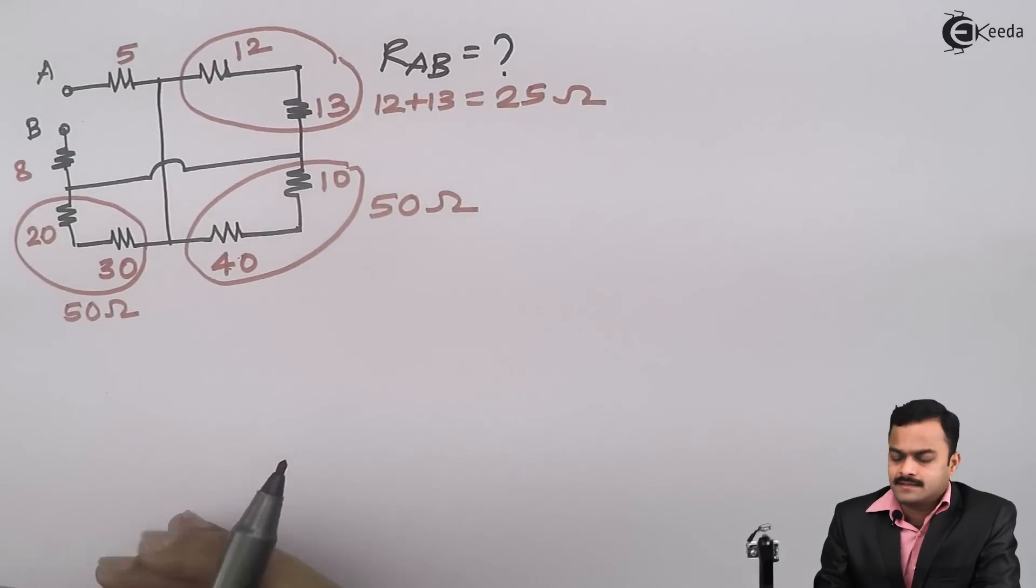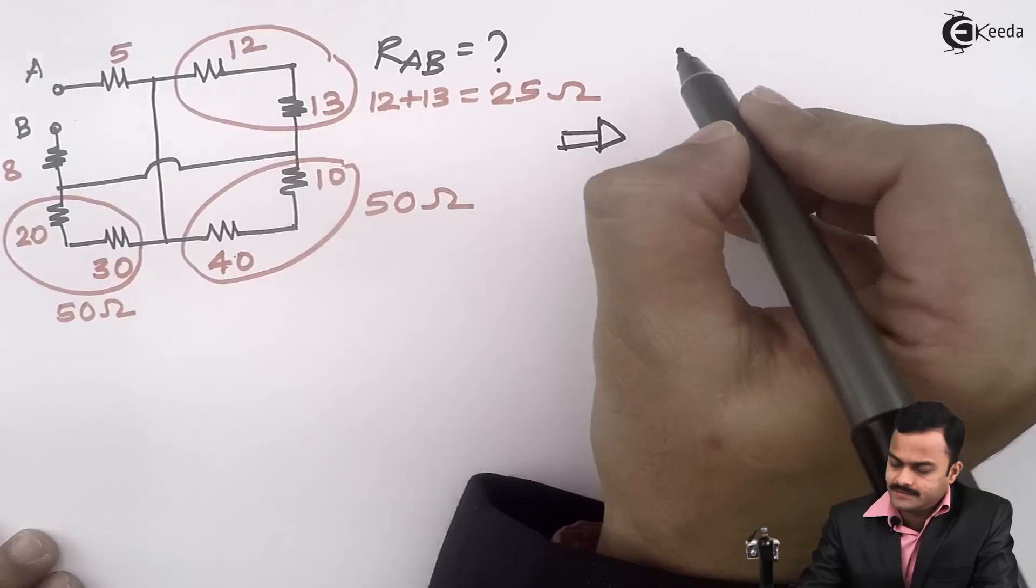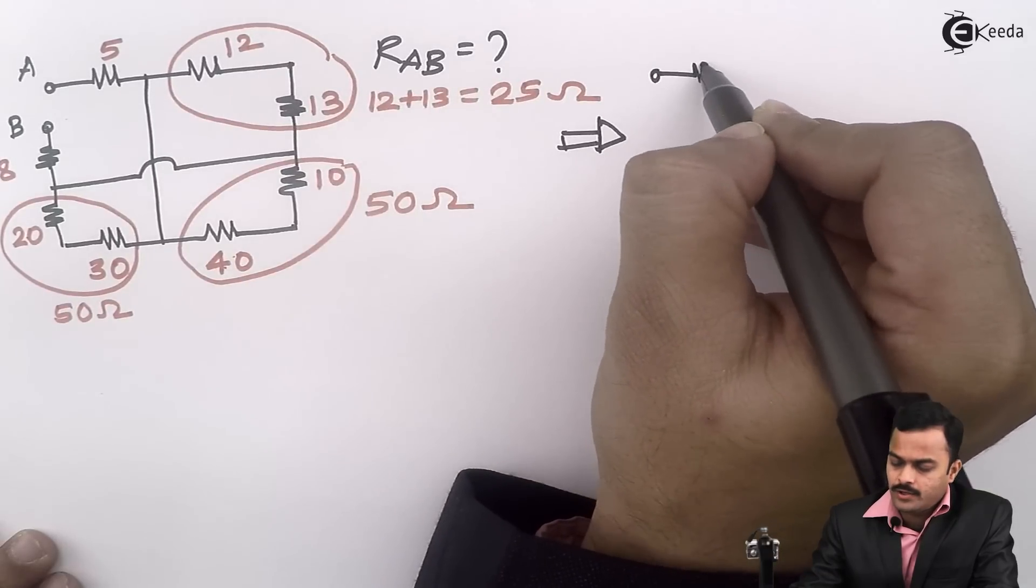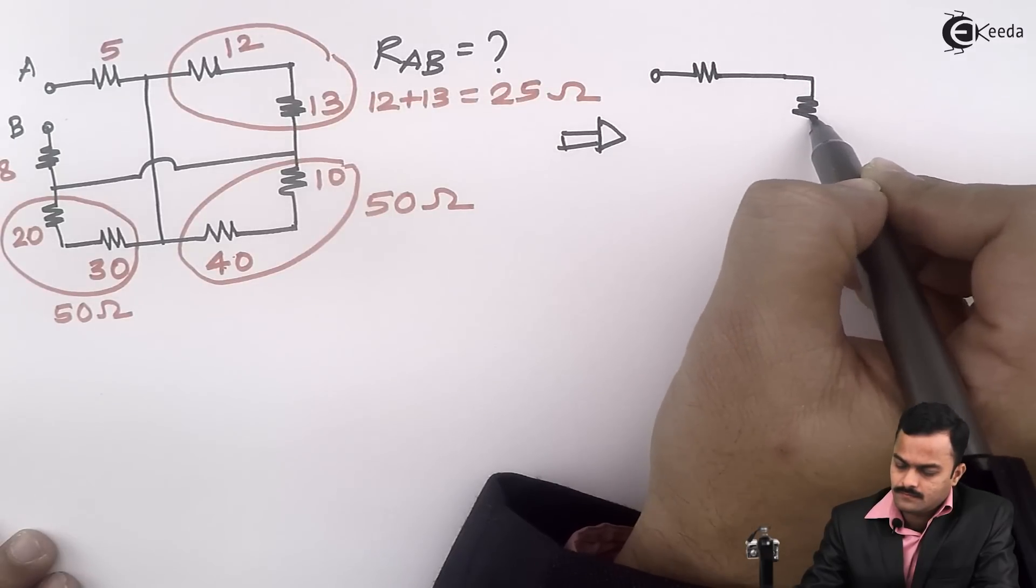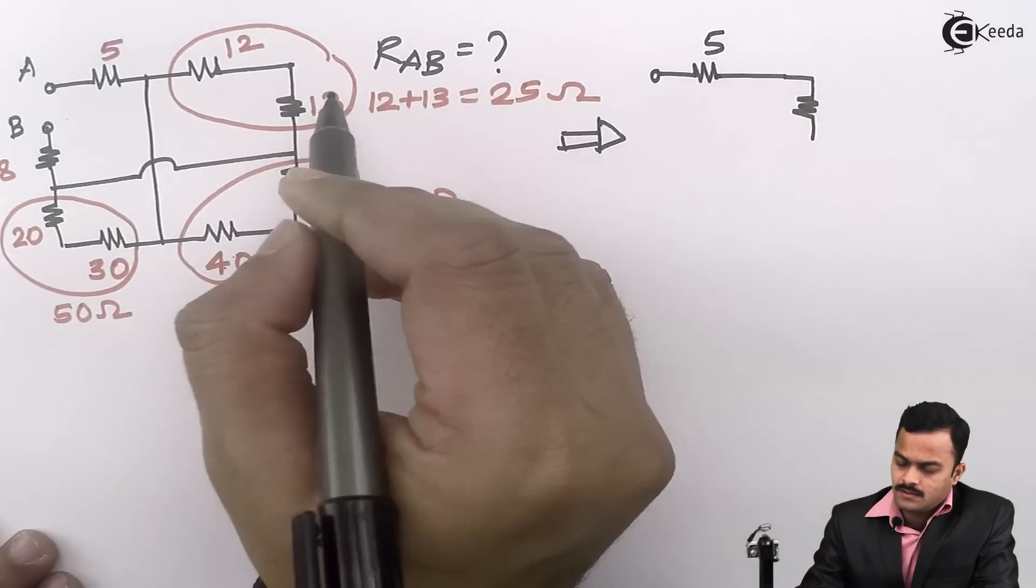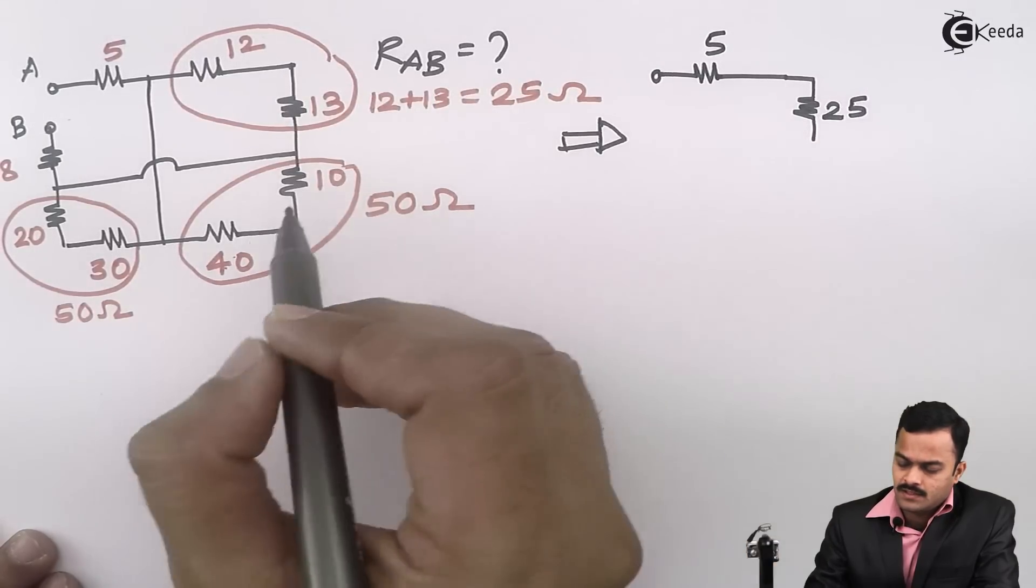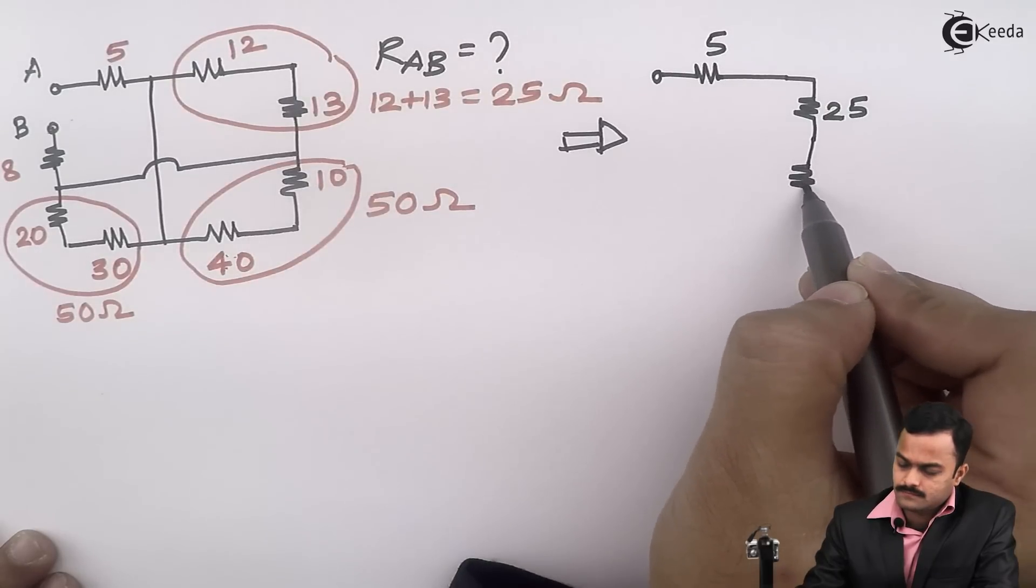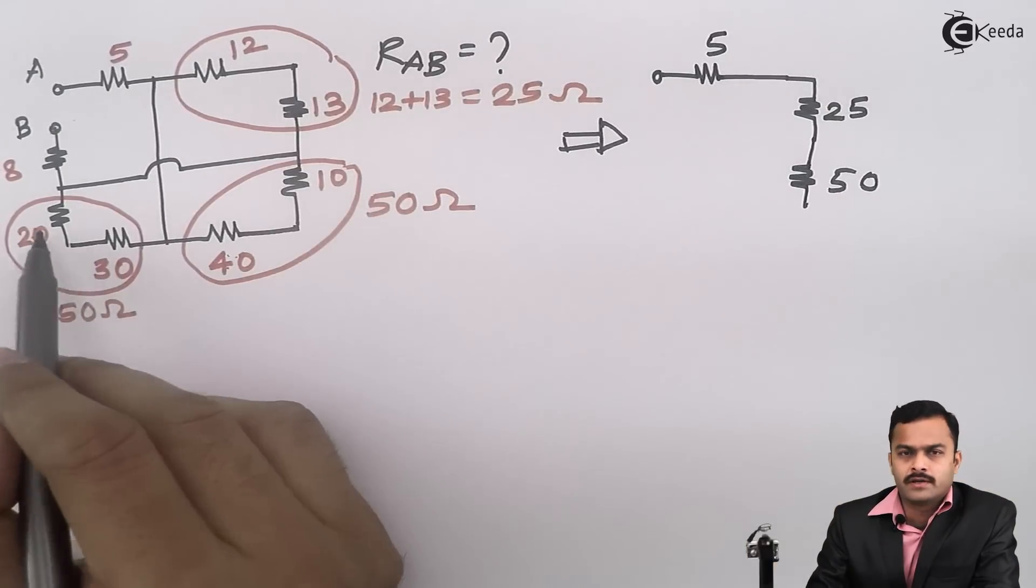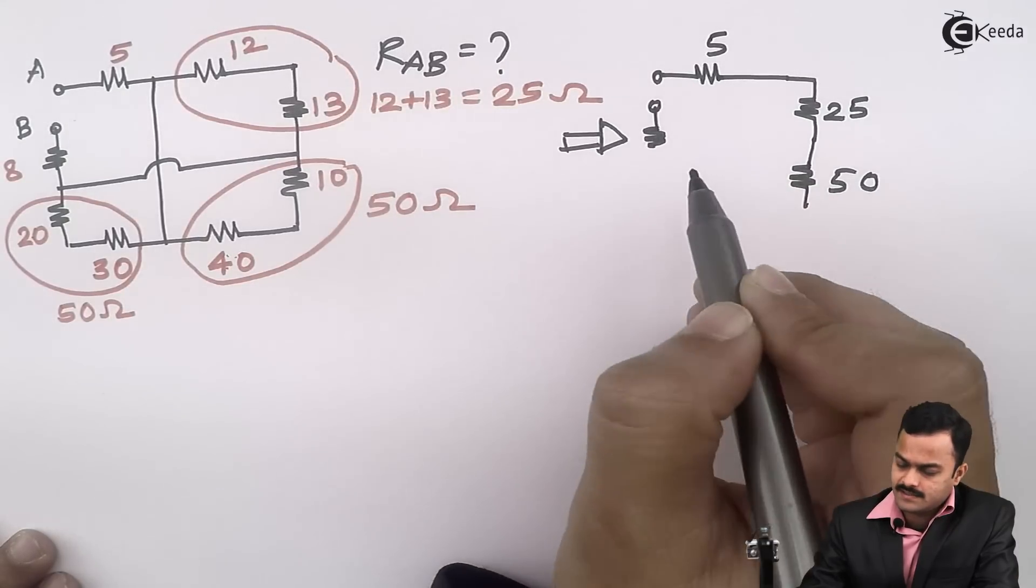So the circuit will look like this: 5 ohm untouched. This will give you 25, these two will give you 50, and these two will give you 50. Before that, this 8 ohm will remain as it is.